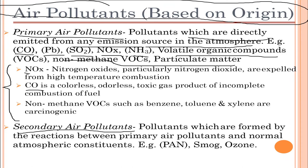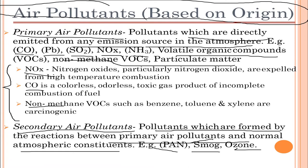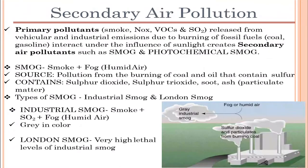Secondary air pollutants are formed by reactions between primary air pollutants and normal atmospheric constituents. Examples include smog and ozone. Smog is the combination of fog and smoke, which is a deadly and very detrimental combination to health. It results from a reaction or mixture of primary air pollutants with normal atmospheric constituents.